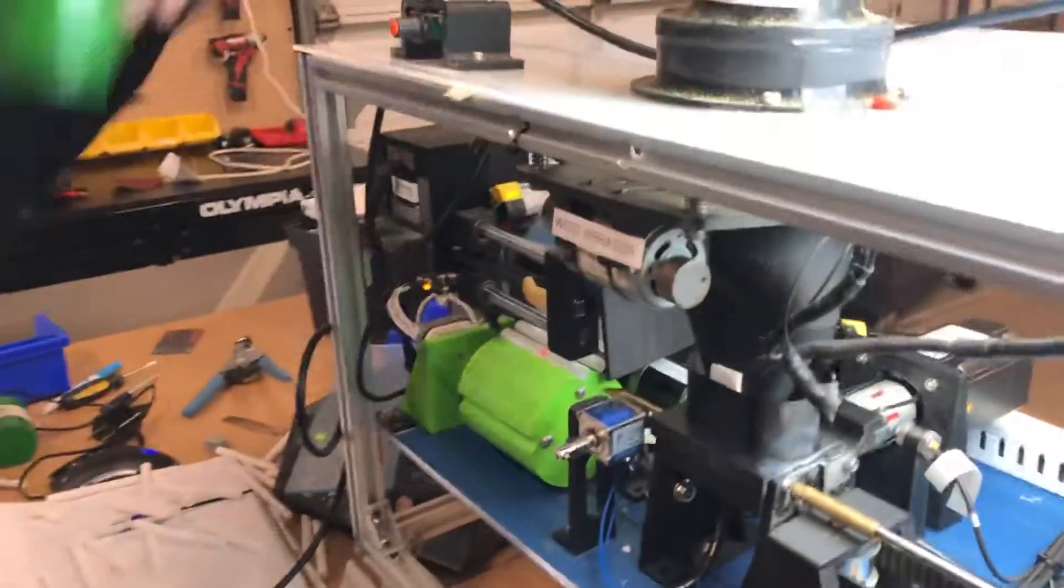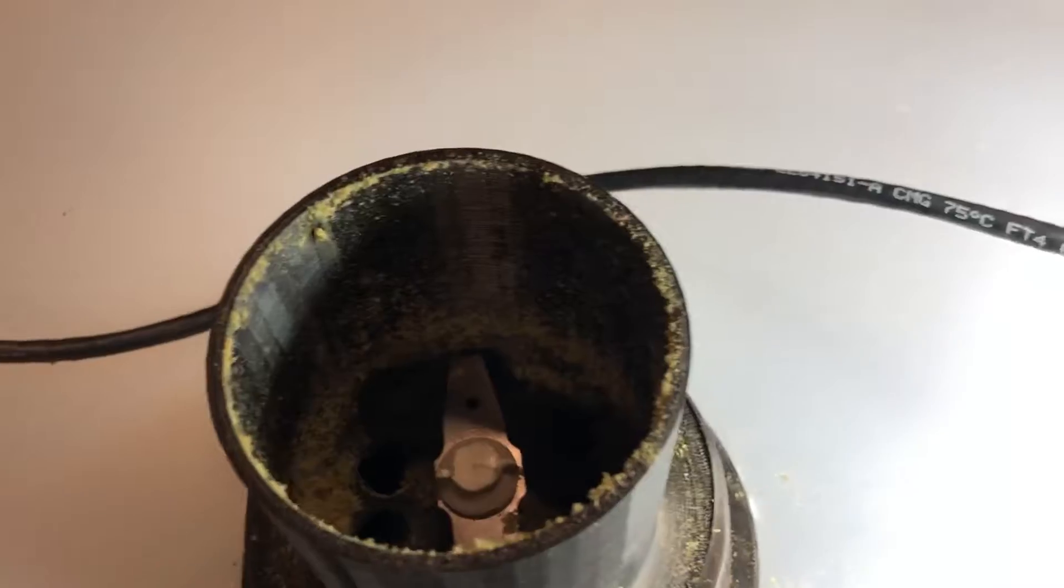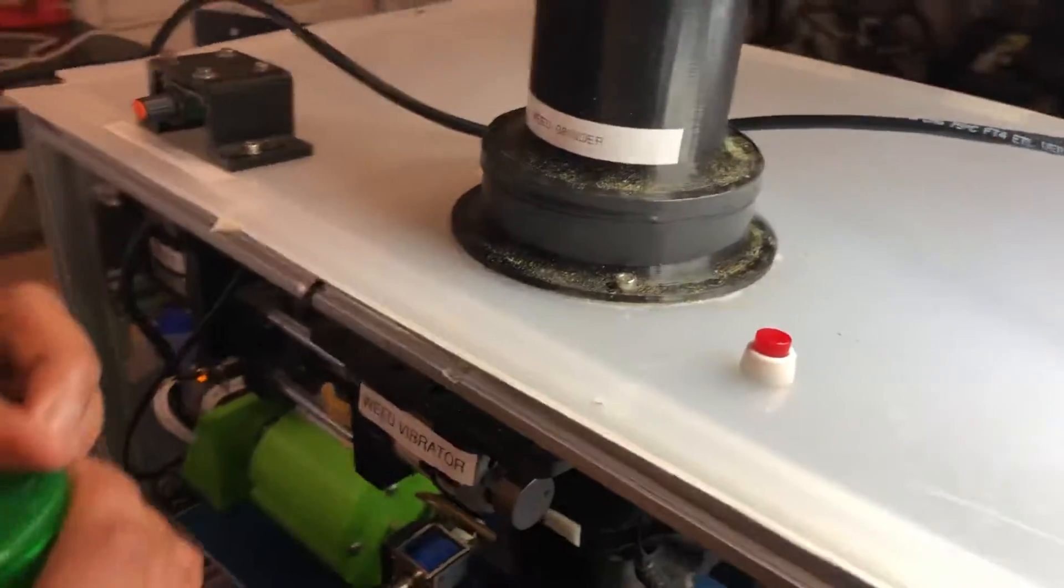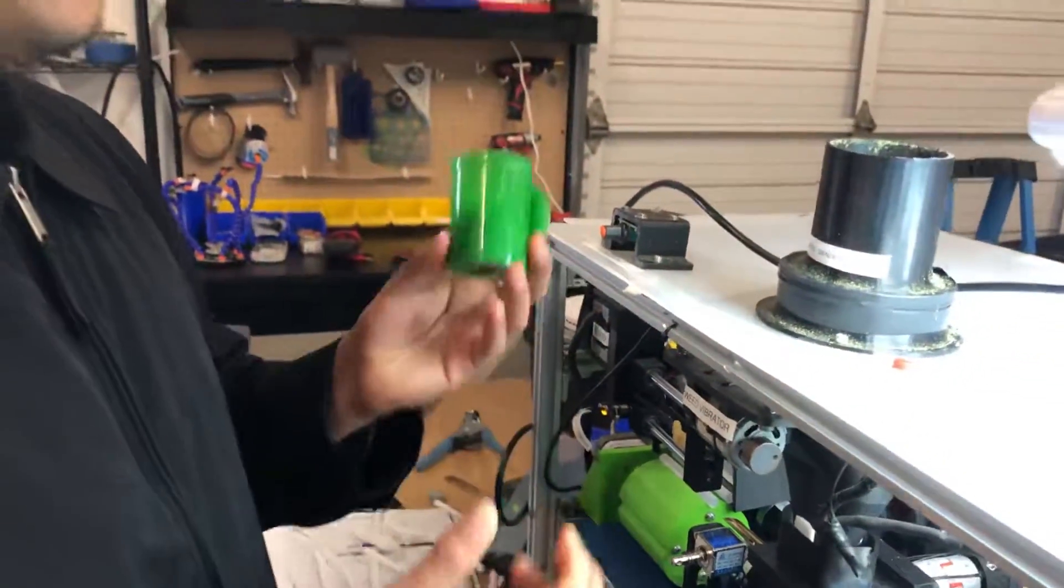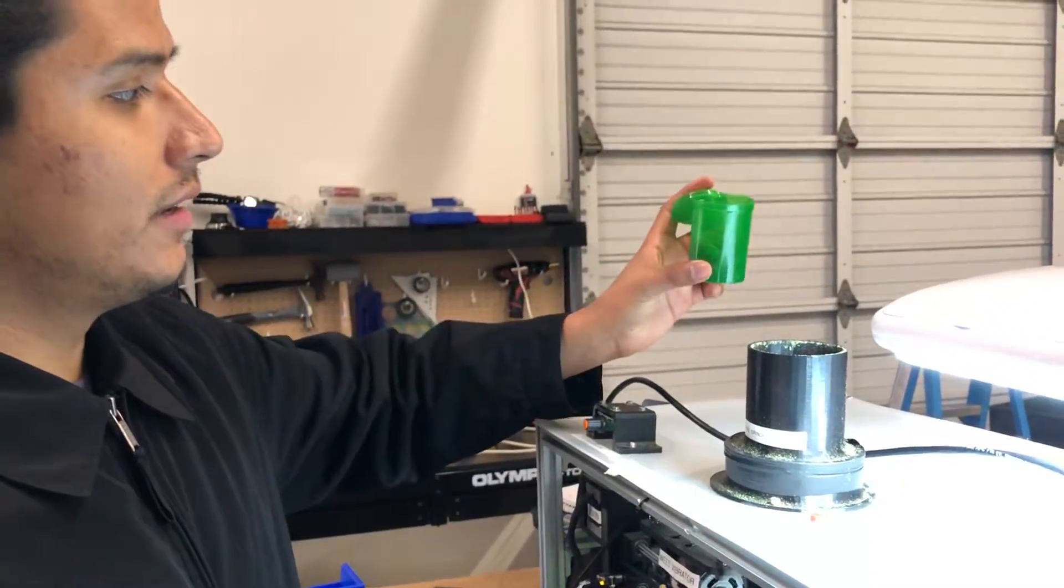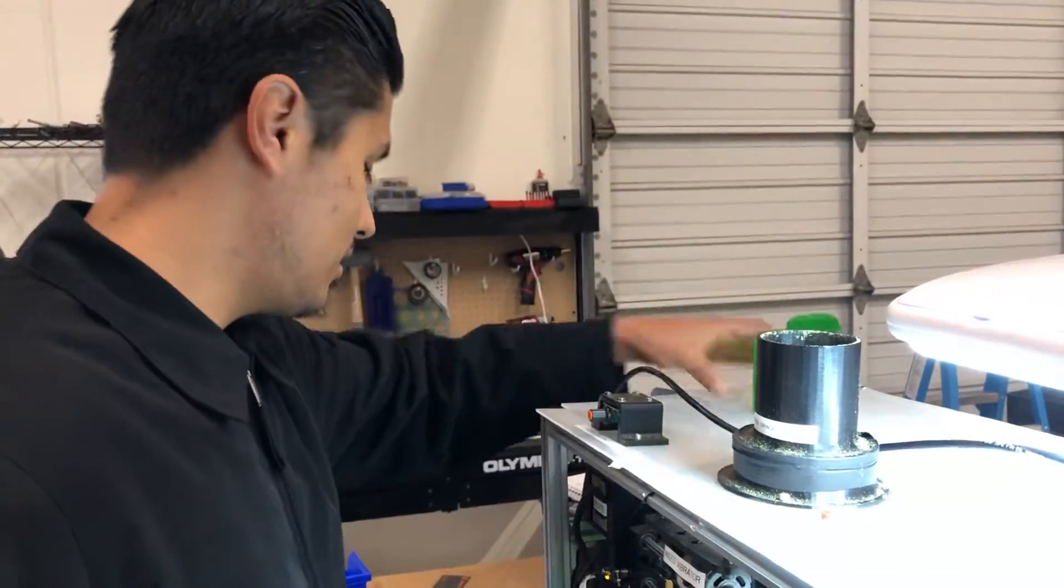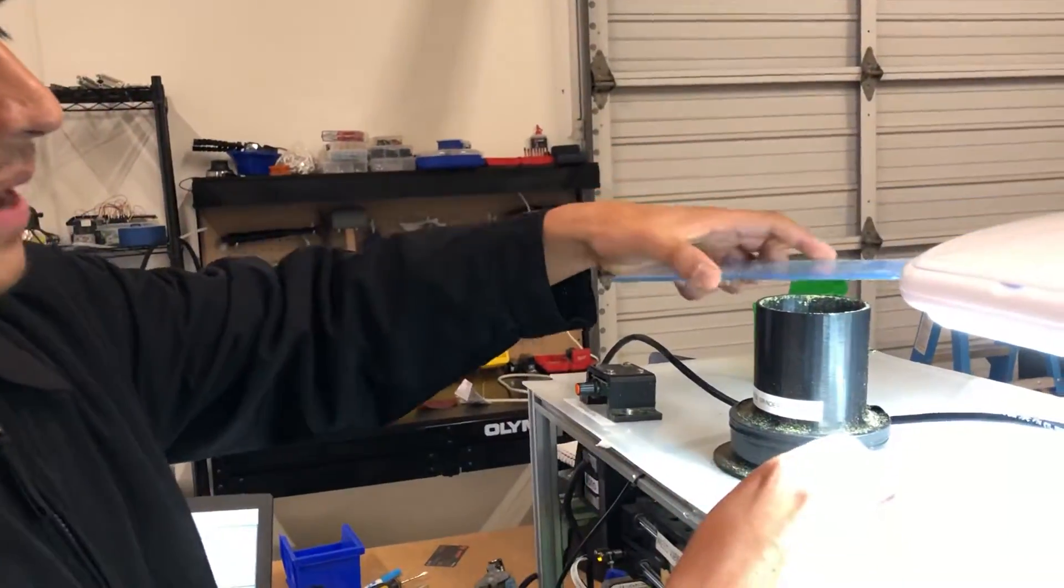Some of the features of the machine is we actually have a grinder built in and right now I'm gonna show how you would load your machine. So we have some weed here. I'm just gonna pour it in there and I'm gonna manually grind it.